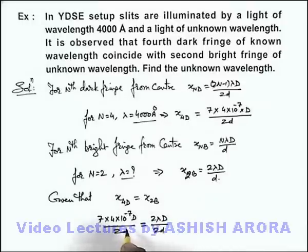Here you can see this - sorry this is not 2, this is only d. So here d gets cancelled out, capital D gets cancelled out, and this 2 gets cancelled out with 4.